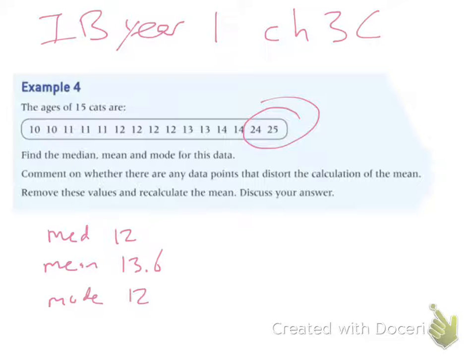So it says, hey, take those values out. So go back to your list, take them out. So now you have less data points. And look at your new mean.